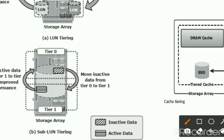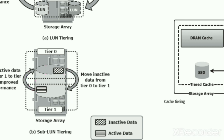For that reason, they moved to sub-LUN tiering. In sub-LUN tiering, within the logical unit, the inactive data is moved to Tier 1 — the secondary storage — and the active data that is being requested is moved back to Tier 0. This way, we are not completely copying or moving all data from the logical units; instead, within the logical units we segregate active and inactive data. Active data is kept in Tier 0 and inactive data is pushed to secondary storage.